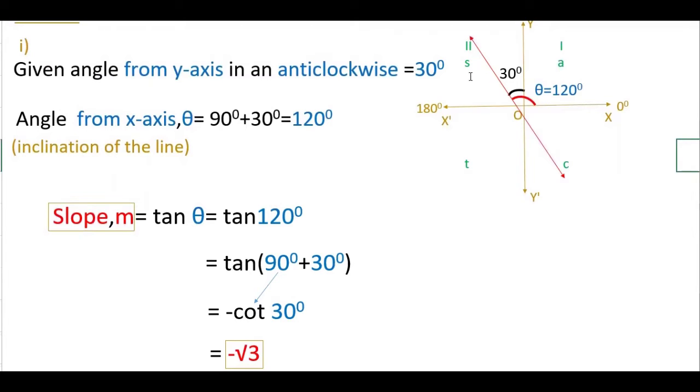Because it is in the second quadrant. Second quadrant, sine and cosecant only positive, remaining all are negative. So you have to put minus sign here. So minus cot 30 is root 3. So the slope is minus root 3.